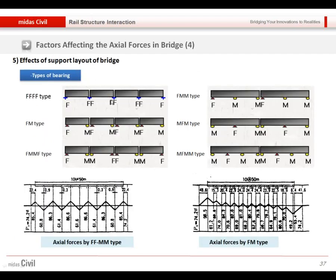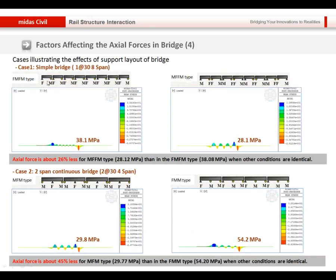And the support layout is another factor affecting the axial force. So when we have fixed roller, or fixed roller, roller fixed, or roller fixed roller, and fixed roller roller, with those different conditions, how the axial force will be obtained? Firstly, comparing to those two, the axial force is much less in case of the second support type. And also if we compare those two, we can see the axial stress is much less in case of this case, which has the smaller expansion length.